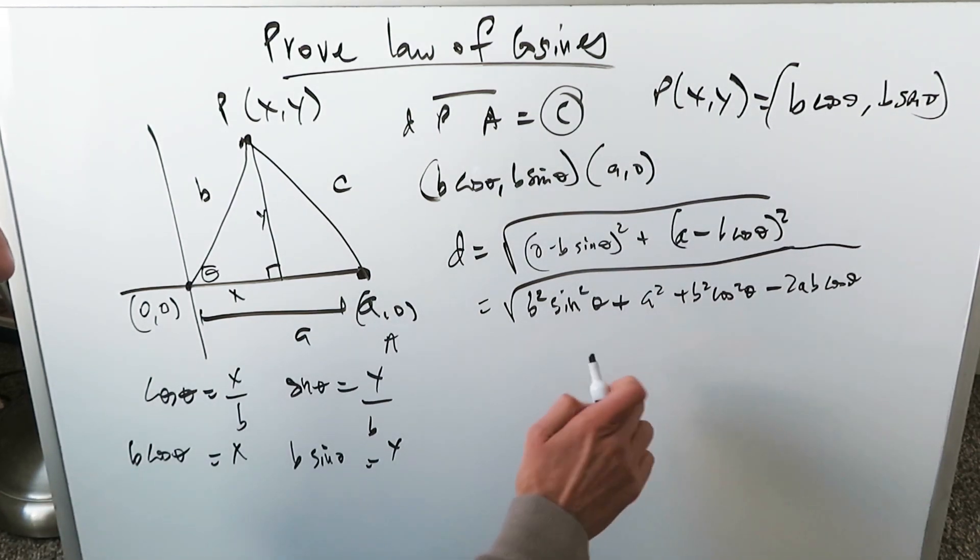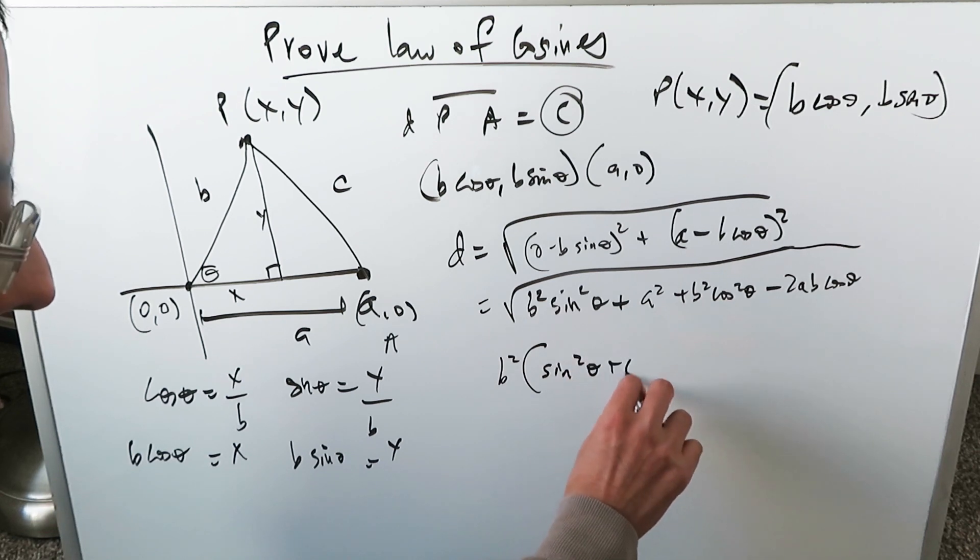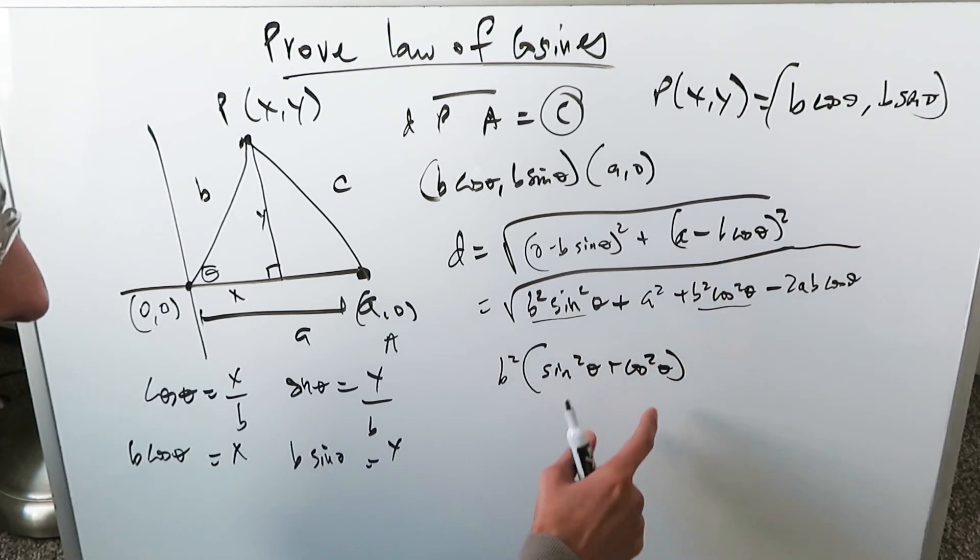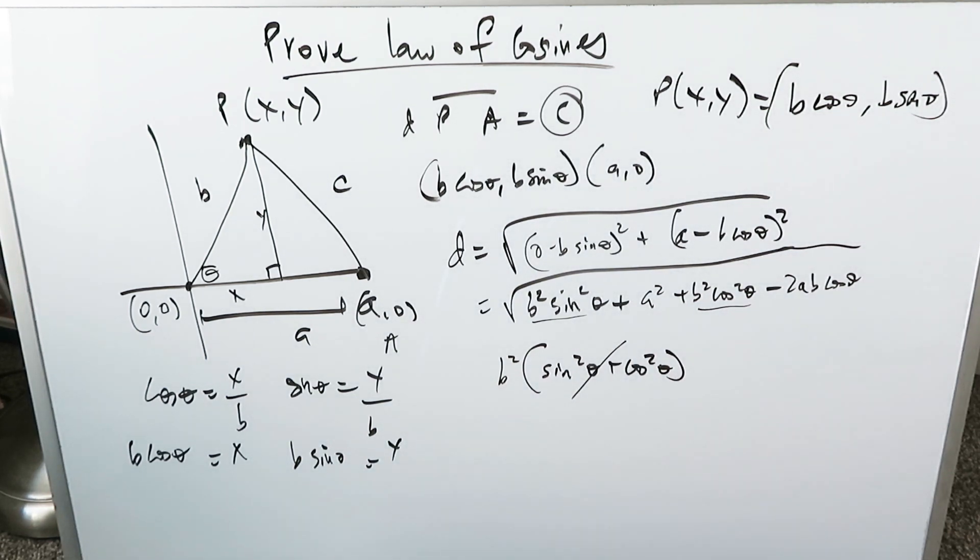If you look at this entire expression, you can isolate b square. And let's just work here on the side. It'll have sine square theta plus cosine square theta. This is me isolating and looking at those two. This is equal to 1. You're just going to get a b square from right there. So that's easy.